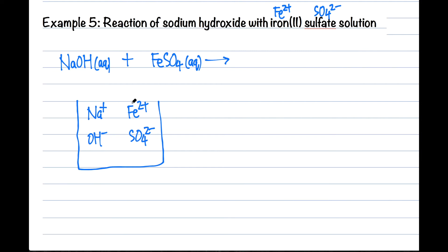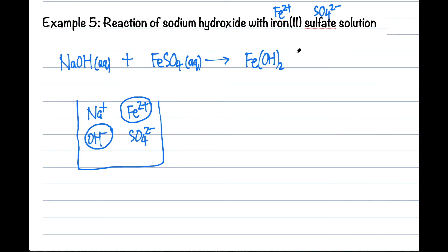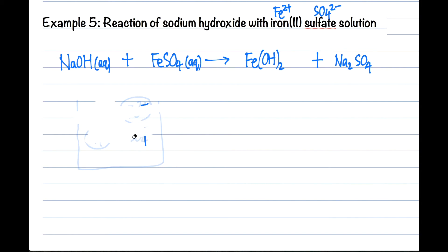In this case, Fe²⁺ can form a precipitate with hydroxide ions, and that precipitate is iron(II) hydroxide. Since it's Fe²⁺, we need 2 OH⁻ to form a neutral compound. Whatever is left is actually sodium sulfate. Let's erase and then balance the equation first.